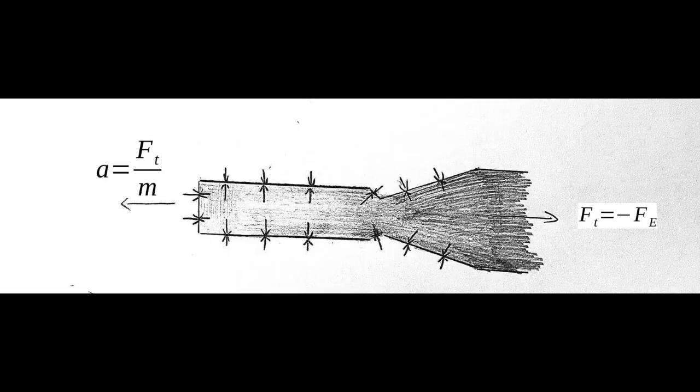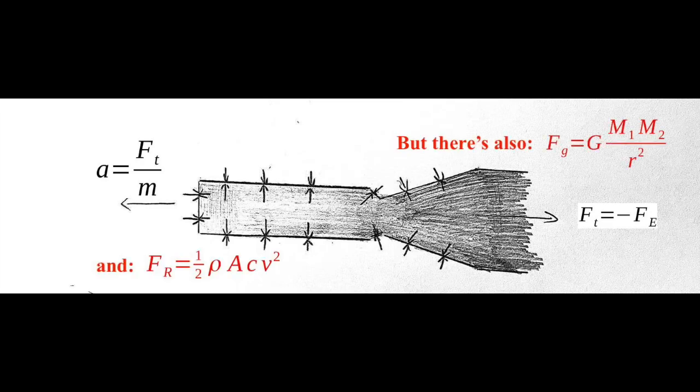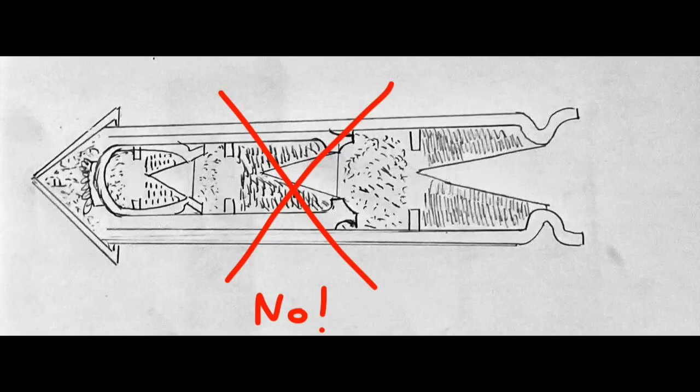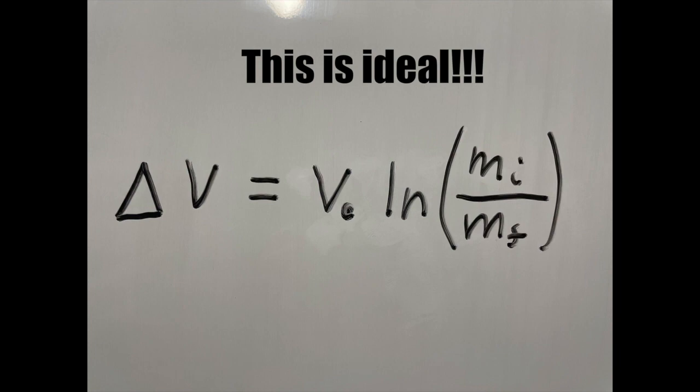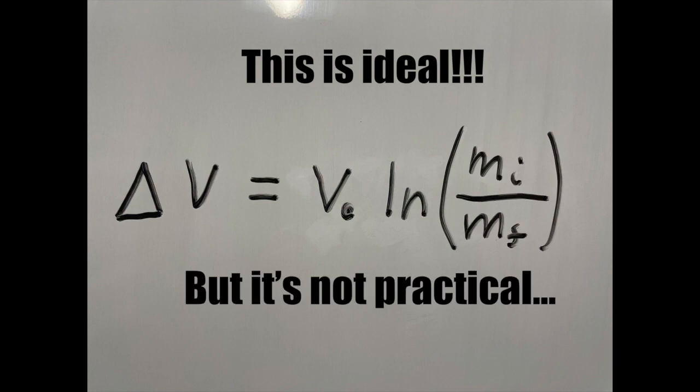Since this rocket equation does not consider the effect of other forces such as gravity or air resistance acting on the rocket, and also doesn't apply for multi-stage rockets, the Tsiolkovsky rocket equation is also being referred to as the ideal rocket equation. Ideal situations where the rocket's motion exactly corresponds to that described by the equation are very rare, almost non-existent due to so many acting forces in our universe.